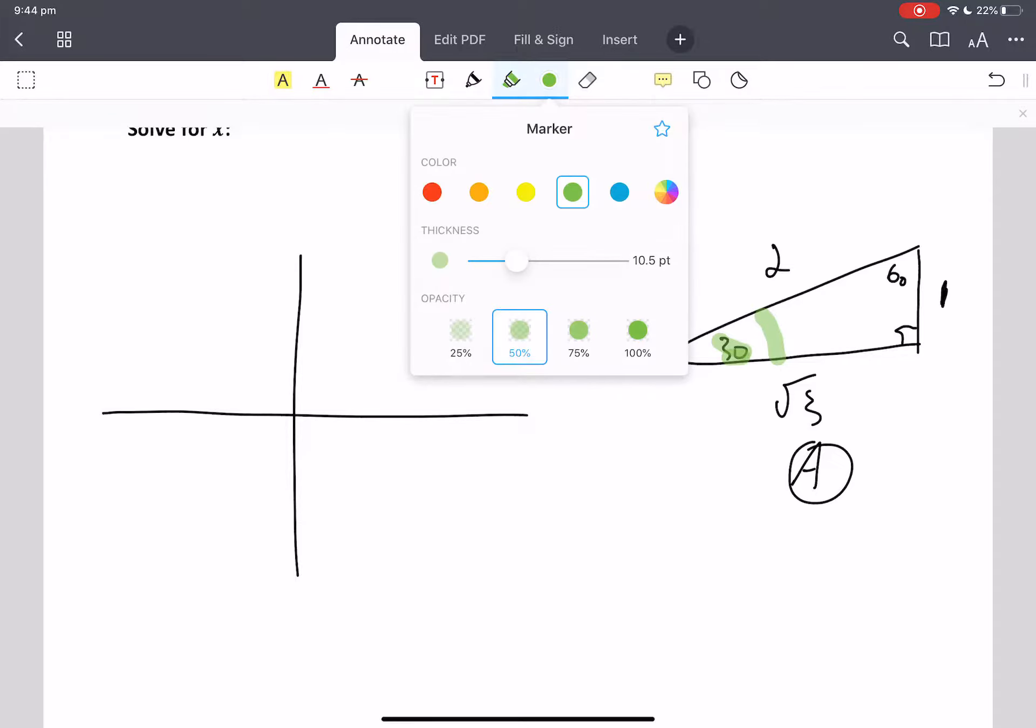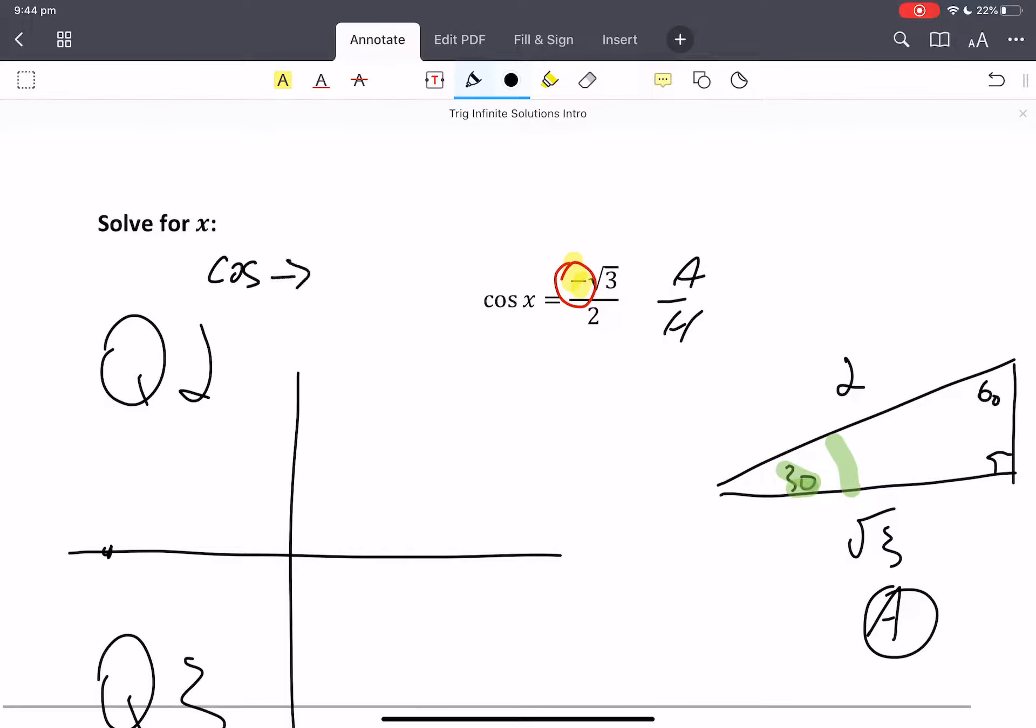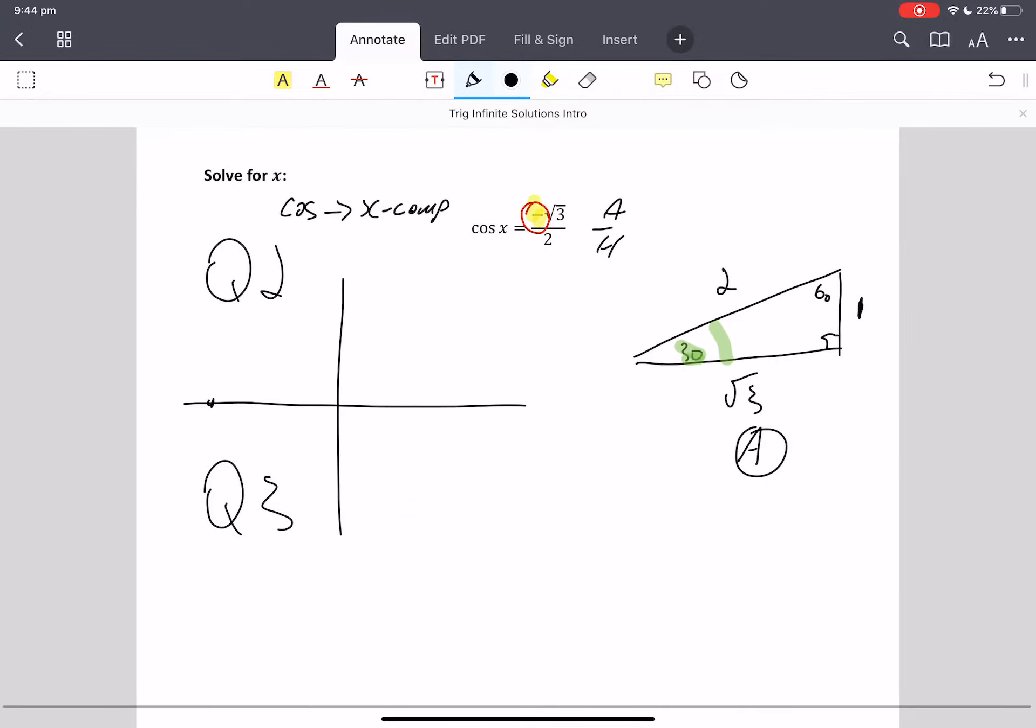Did we notice here that there's a negative? So we need to draw the reference angle in the quadrants where cos is negative. Cos is negative over here in quadrant 2 and quadrant 3, because if we cared to write it, we would go cos is the X component. So it's negative in quadrant 2 and 3. So I've got to draw my reference angle, which is 30, off my X axis in quadrant 2. There's my 30. And in quadrant 3, there's my 30.